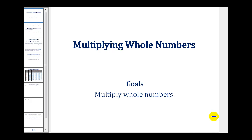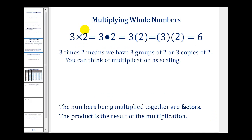Welcome to a lesson on multiplying whole numbers. Here we have 3 times 2, and the first thing we should notice is there are many ways to write multiplication. All of these mean 3 times 2, and we can see the product is equal to 6.